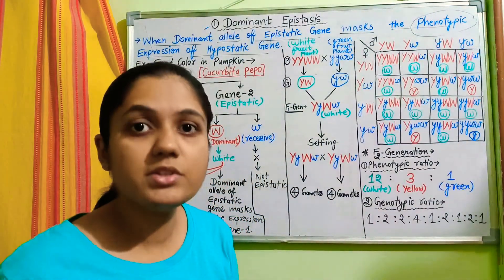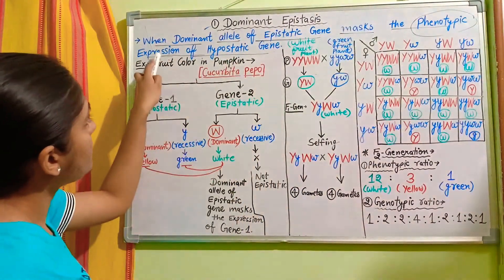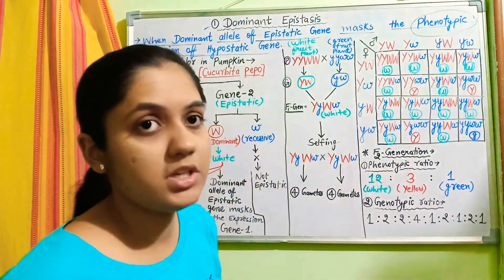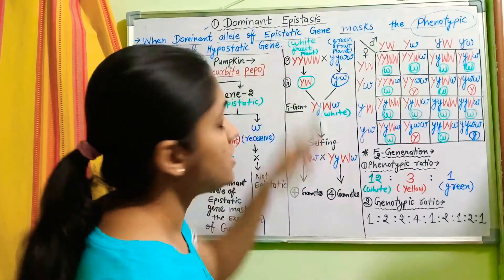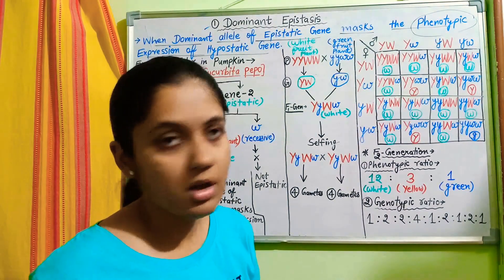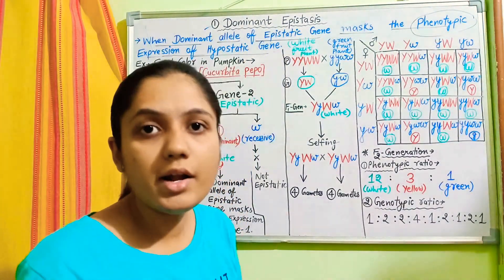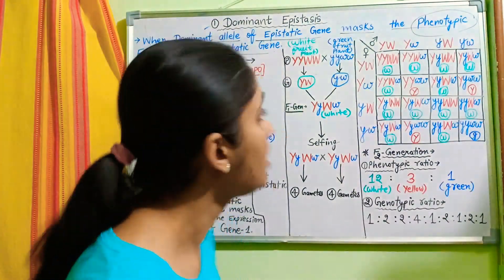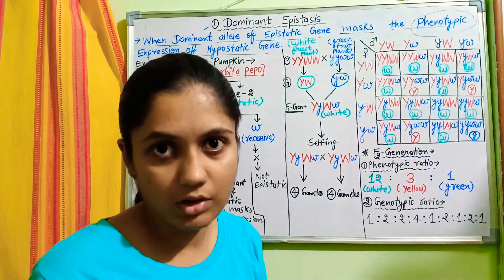The epistatic gene is the gene responsible for suppressing another gene, and the hypostatic gene is the gene which is suppressed and cannot express itself because of that suppression. In dominant epistasis, the dominant allele of the epistatic gene is involved in this suppression.